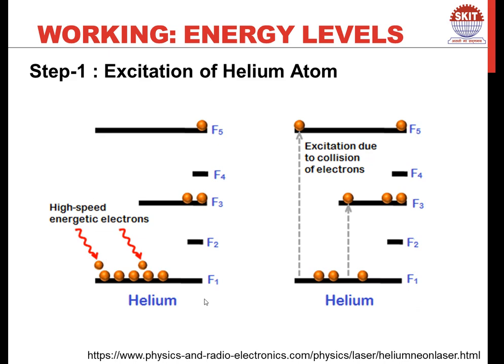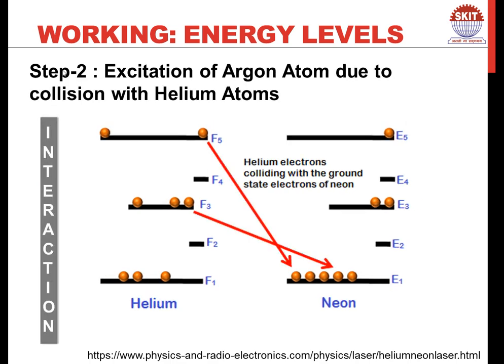What happens is that high-energetic electrons interact with helium and pass energy to it, causing helium to reach a higher energy state. F1 is the ground state and F3 and F5 are excited states that can be reached by absorption of energy from electrons. Now step one is excitation of the helium atom by absorption of energy from energetic electrons. Step two is the interaction between helium and neon. Since helium is in larger quantity and neon is less, F3 and F5 are metastable energy states, meaning back-transition to ground state is not probable — but these helium atoms can transfer their energy by collision to neon atoms very easily.